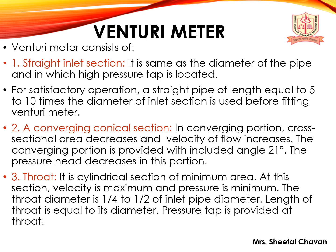The venturimeter consists of a straight inlet section with the same diameter as the pipe, where the high-pressure tap is located. A straight pipe length equal to 5 to 10 times the inlet diameter is required before fitting the venturimeter. In the converging conical section, the cross-sectional area decreases and velocity increases, with an included angle of 21 degrees, and pressure head decreases. The throat is the cylindrical section of minimum area, where velocity is maximum and pressure is minimum. The throat diameter is 1/4 to 1/2 of the inlet pipe diameter, with length equal to its diameter, and a pressure tap is provided there.